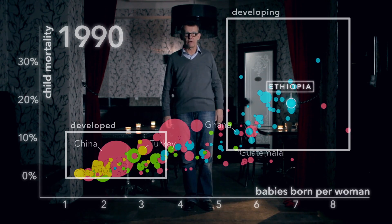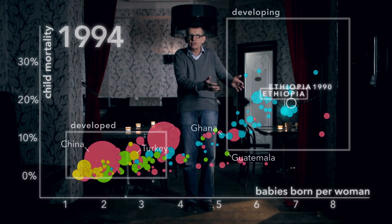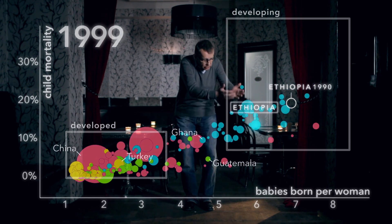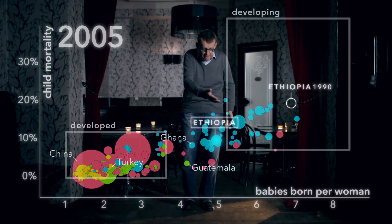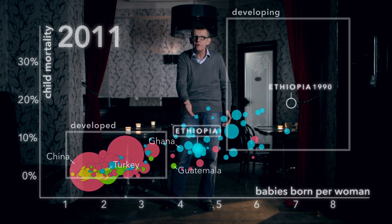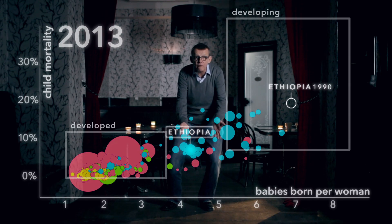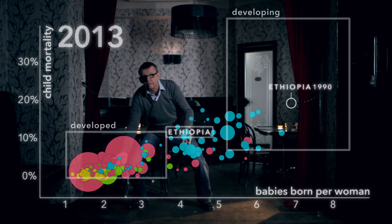It had passed through decades of famines and political turmoil. Many people think that Ethiopia is still stuck up here. But look what happens after 1990. With improved access to health services in rural areas and well-spent aid, child mortality falls dramatically in Ethiopia. And with better access to family planning, women choose to have fewer and fewer babies.